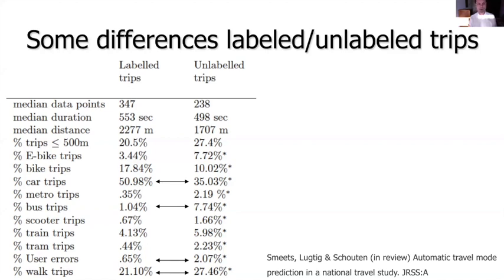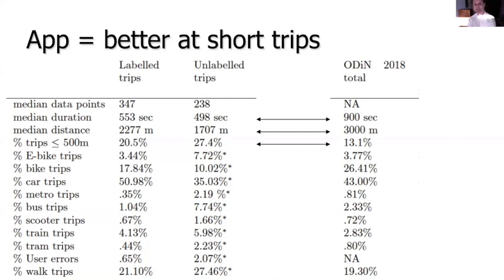The more interesting comparison is between the smartphone data and the data collected earlier with the web diary. We do find differences, and they're often in the direction we want: for example, looking at trip duration, we find that in the web diary people really under-report very short trips, and the smartphone is much better at documenting these. There are also some differences in transport modes — for example in the number of bike trips — which partly reflects that our smartphone study happened during a month with particularly bad weather.